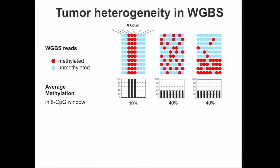Here I have an example of three loci. Each locus consists of eight CpGs in the columns, and each row represents a sequencing read, where the methylated CpGs stay the same, denoted by the red circles, whereas the unmethylated CpGs were converted, denoted by blue. If you just compute the read methylation, all three loci have about 40% methylation.